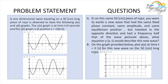A one-dimensional wave traveling on a 50-centimeter long piece of rope is observed to have the following graphs: the y versus x graph is at time t equals zero seconds, and the y versus t graph is at position x equals 15 centimeters. Question A asks: if on this same 50-centimeter rope you excite a new wave with the same fixed phase constant, same amplitude, and same equilibrium position, but traveling in the opposite direction and with a frequency half that of the wave pictured above, what equation would describe this new wave?